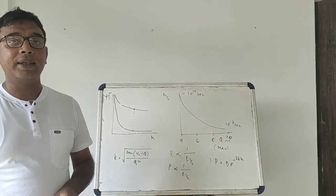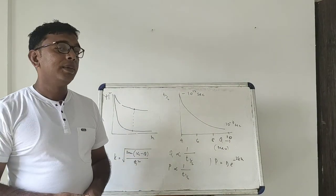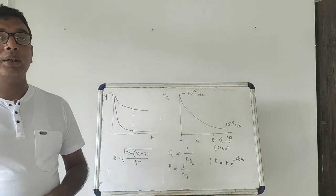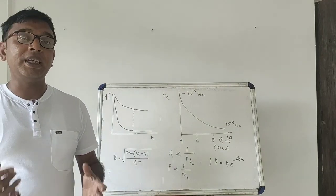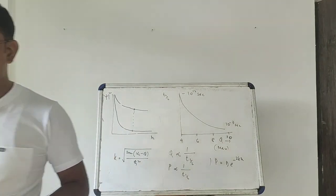This is how quantum mechanics allows us to explain the emission of alpha particles from a nucleus even though classically it is forbidden — through a process called quantum tunneling. This is the essence of Gamow's theory of alpha decay. Next time we will talk about beta decay. Thank you very much.